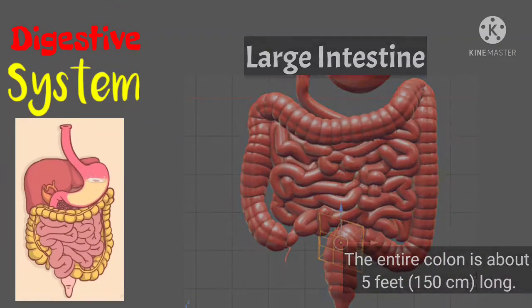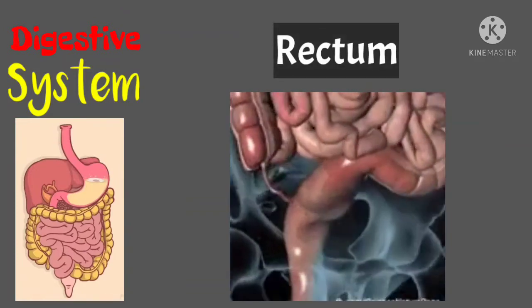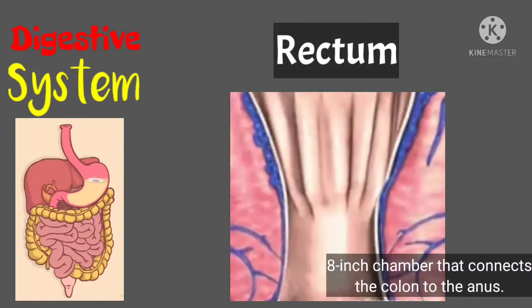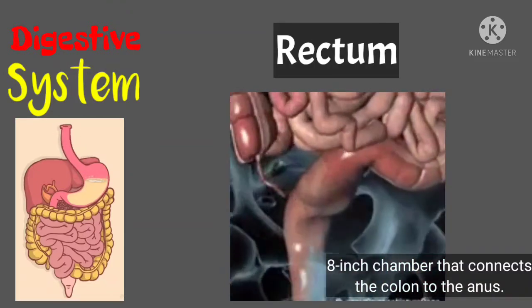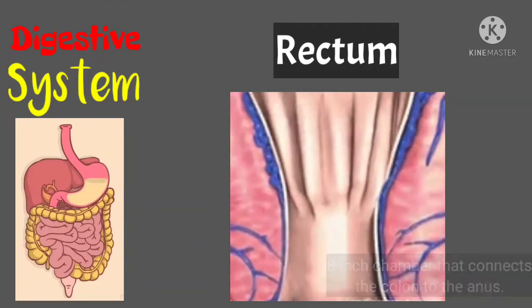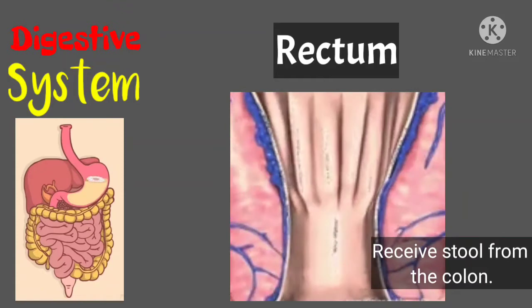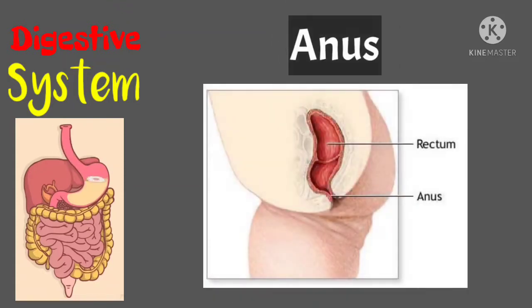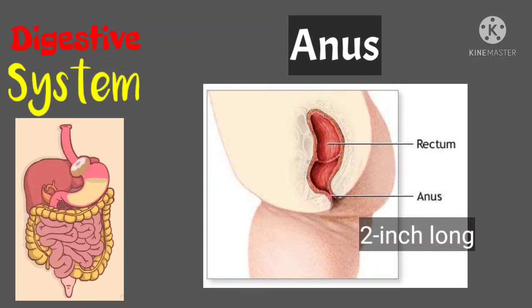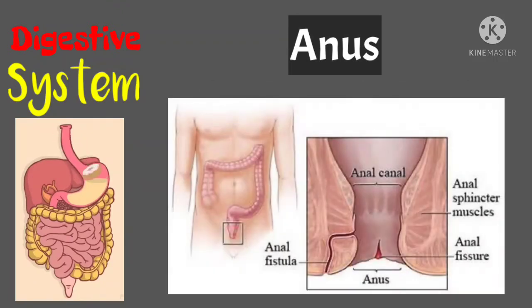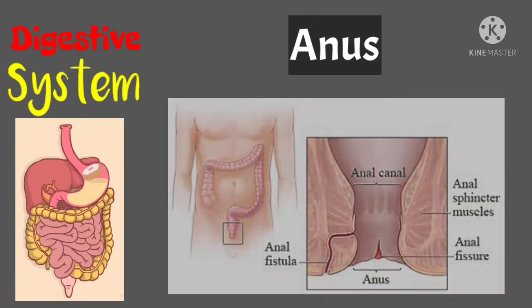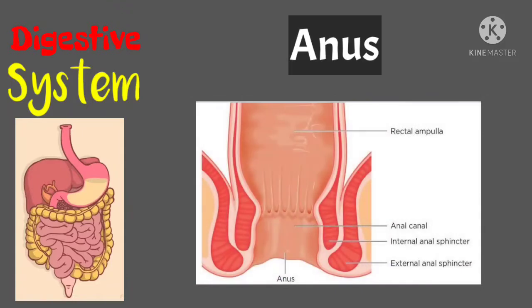Next is the rectum. The rectum is a straight 8-inch chamber that connects the colon to the anus. The rectum's job is to receive stool from the colon. Lastly is the anus — the last part of the digestive tract. It is a 2-inch long canal consisting of the pelvic floor muscles and the two anal sphincters. It is the opening to the lower gastrointestinal tract and connects to the rectum.